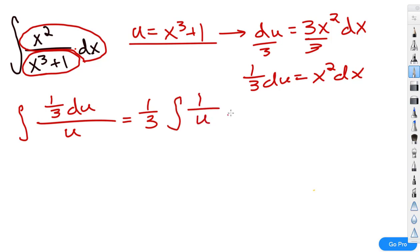So, that's going to be 1 third times the integral of 1 over u du. Now, remember, the antiderivative of 1 over u, this is a special antiderivative, so that's going to be 1 third times the natural log of the absolute value of u plus c.